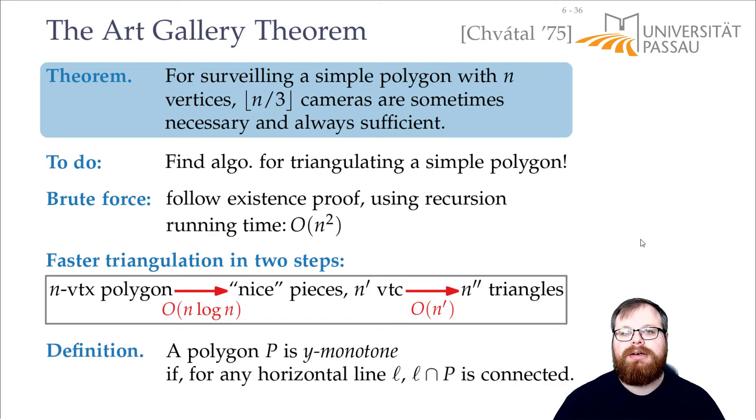So we will use a generalization of it. We will use y-monotone pieces. In a convex polygon, for all two points, the connection between them must lie in the polygon. In a y-monotone polygon, that has to only be the case for two vertices with the same y-coordinate. Or if we intersect any horizontal line with our polygon, then this gives us a connected intersection.